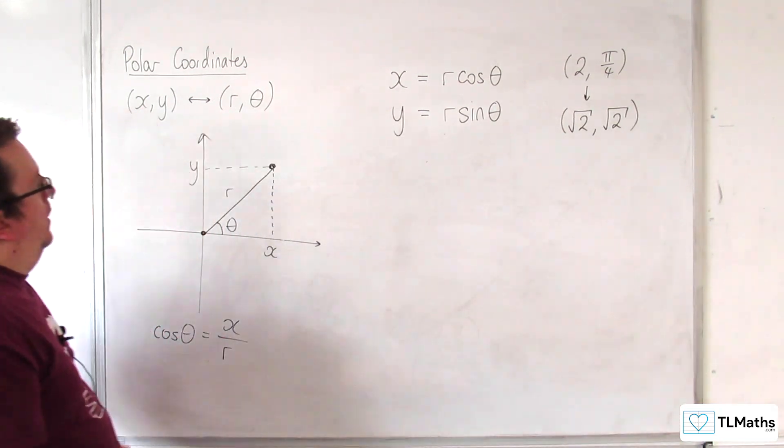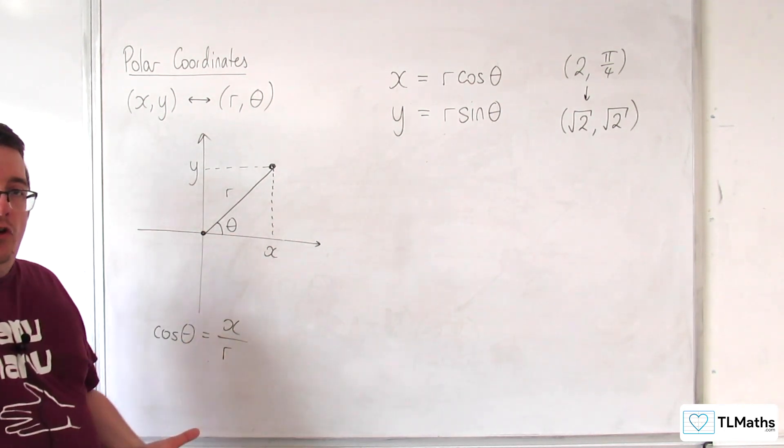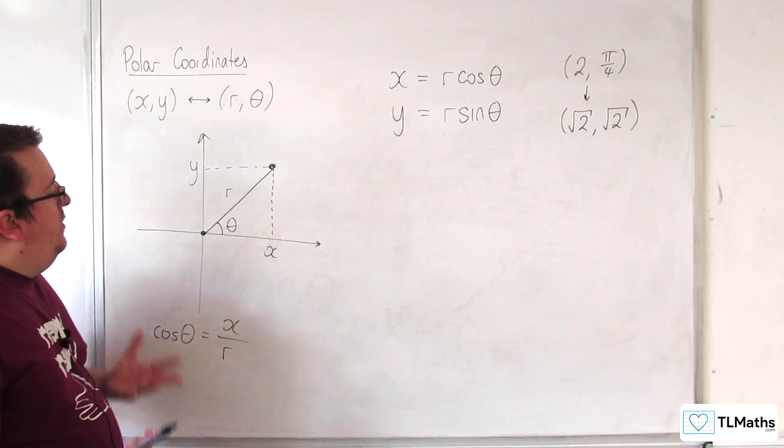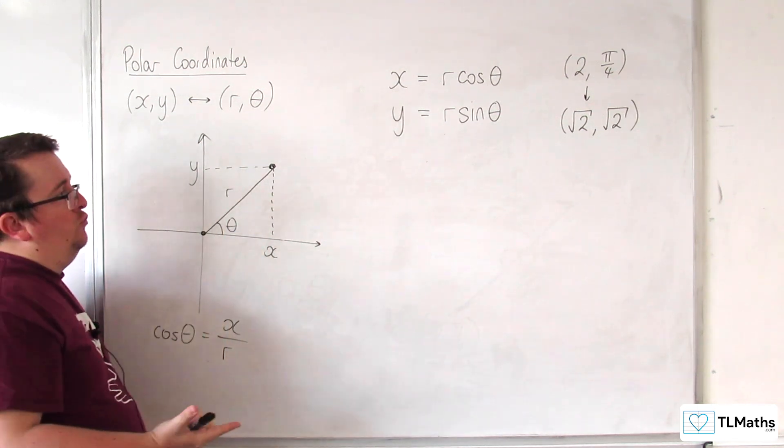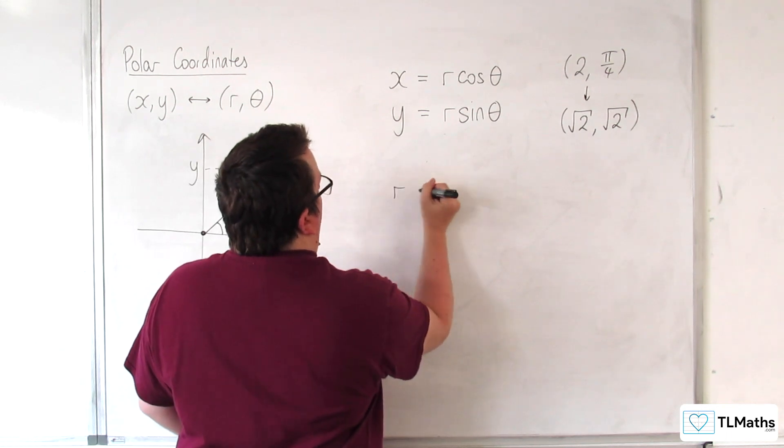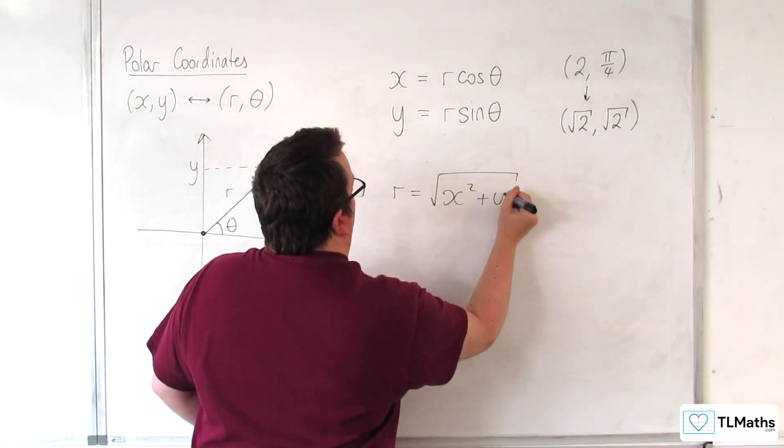Now, if you've got your X and your Y, then R here is clearly the hypotenuse of a right-angled triangle. So R is going to be equal to the square root of X squared plus Y squared.